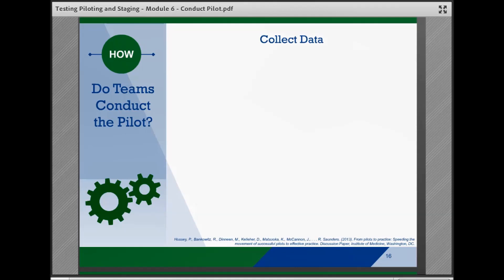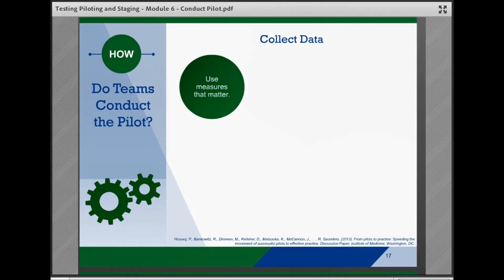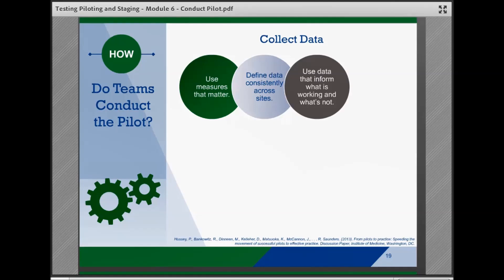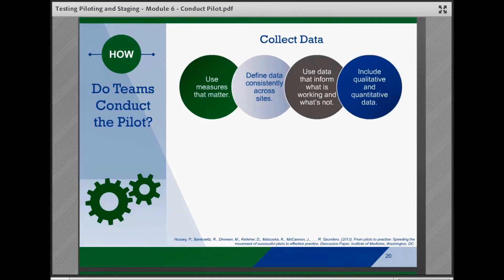As discussed in Module 4, teams should identify site data to be collected, how it should be collected, by whom, and when, as they develop a pilot plan. The capacity of the site to participate in data collection should be considered in the selection criteria. Teams should find measures that matter to assess pilot results and define them consistently for use across sites. Data should provide insight into what's working and what's not, and under what circumstances. This may include both quantitative data to track activities and outcomes, as well as qualitative data from provider or participant feedback.